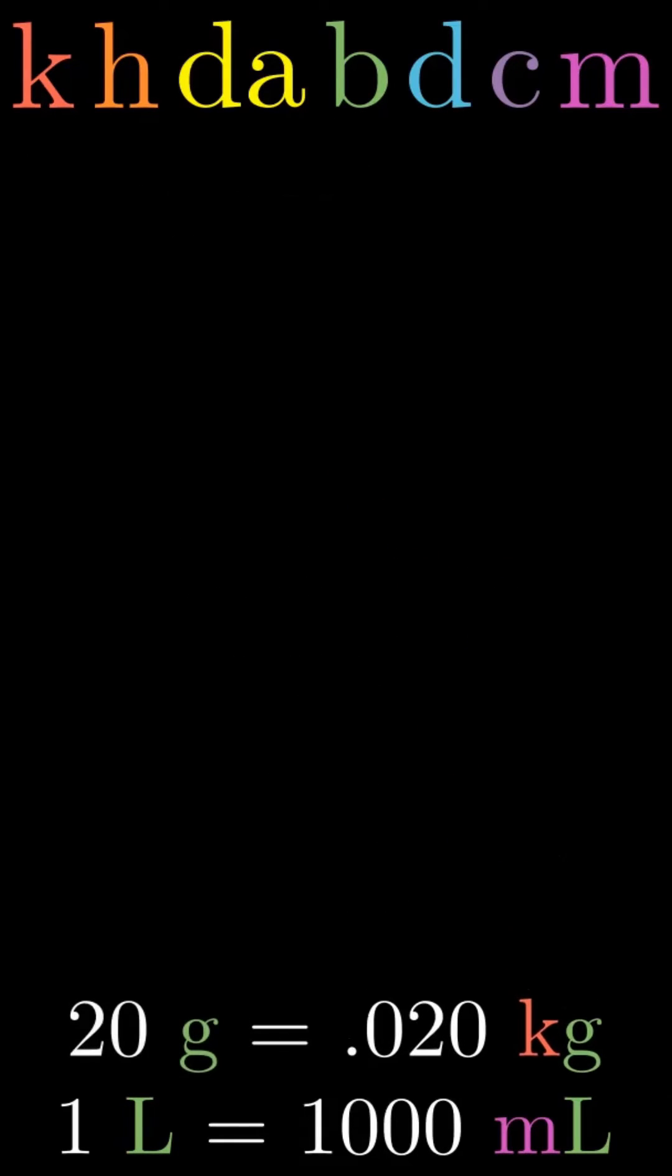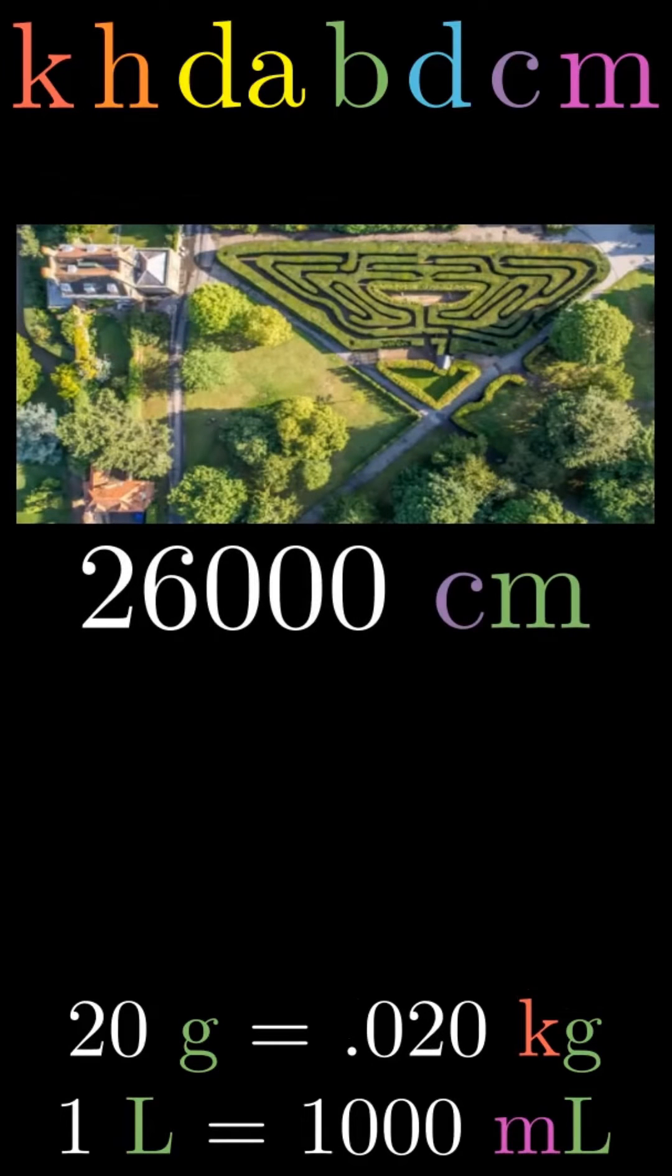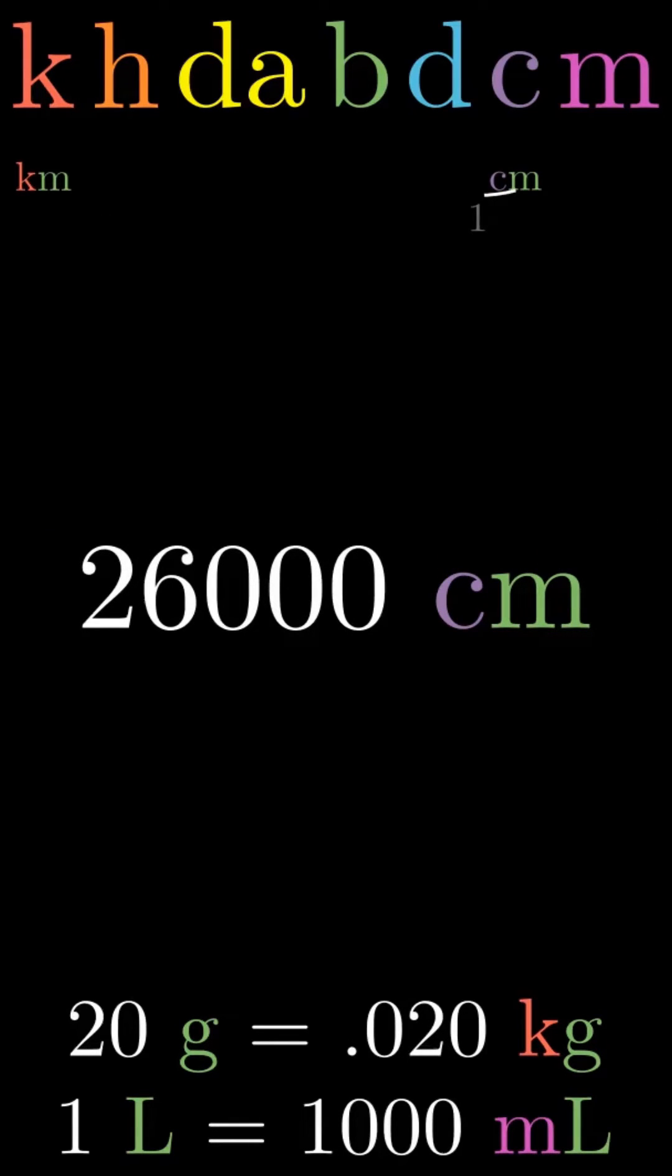But I don't have to convert to or from the base. The path through the maze at Hampton Court Palace is about 26,000 centimeters. If I want that in kilometers, that requires moving five places to the left. This makes the distance 0.26 kilometers.